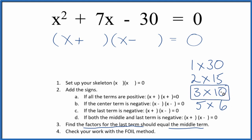So I can put 10 here and 3 here, because 10 minus 3 gives me 7. They add up to the middle term, so we've factored the equation x² + 7x - 30.